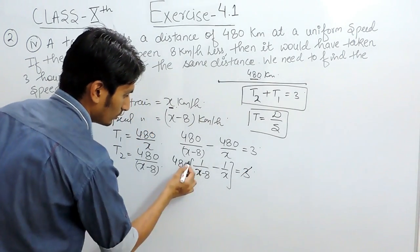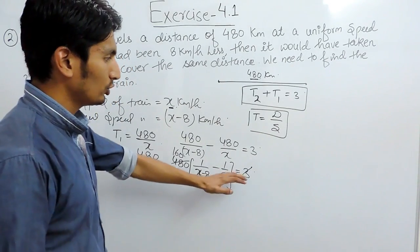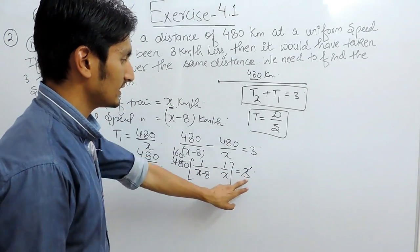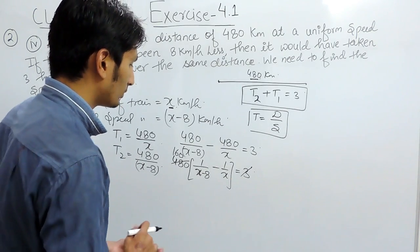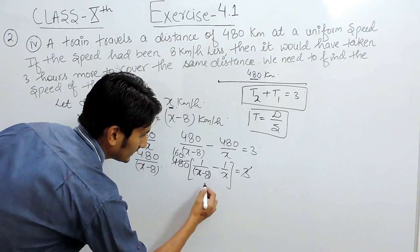This can be cancelled because when the numbers are in the numerator, they can be cancelled since they are on opposite sides of the equal sign. Now you can further solve it. You have to take the LCM, so the LCM must be x minus 8 multiplied by x.